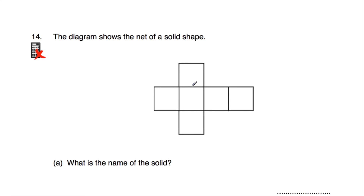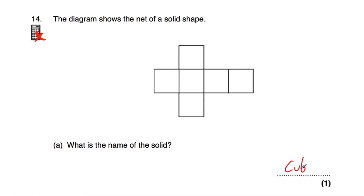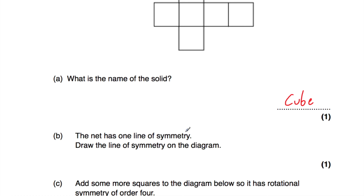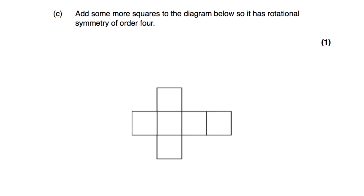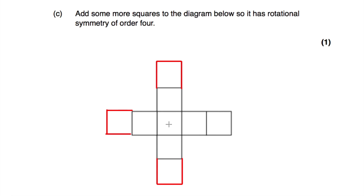Next, we have the net of a cube. Part A: the name of the solid is a cube. Part B: the net has one line of symmetry — a horizontal line of symmetry. Part C: we need to add more squares so the shape has rotational symmetry order 4. Adding three more squares in appropriate positions means spinning through 360 degrees it lands on itself four times.